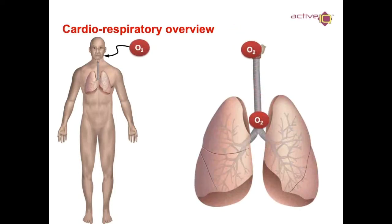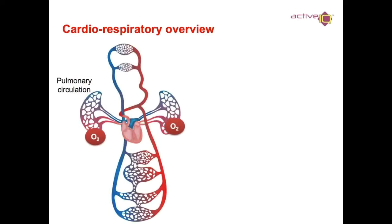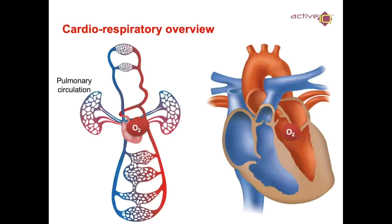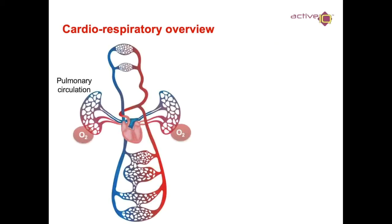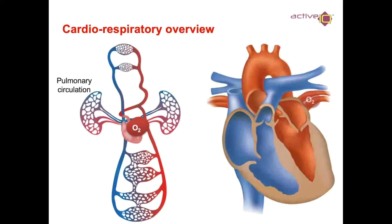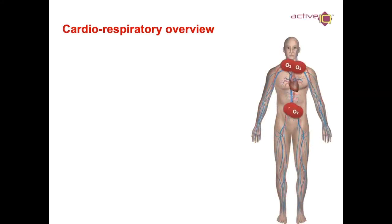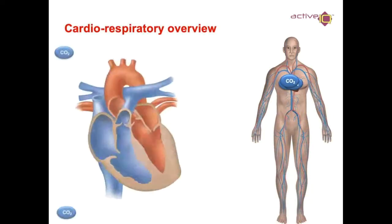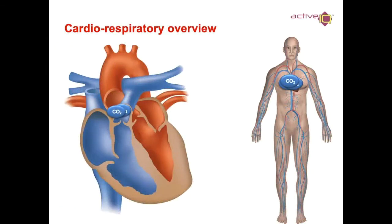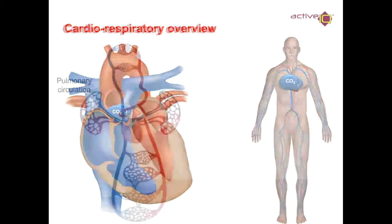In the cardiorespiratory overview: oxygenated blood goes into the heart and back out. CO2 comes back into the heart via the right atrium and right ventricle, then goes back out into the lungs where gaseous exchange takes place.